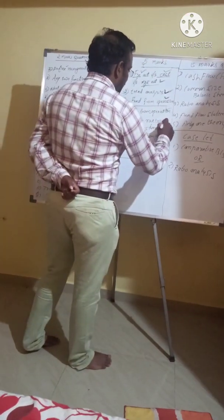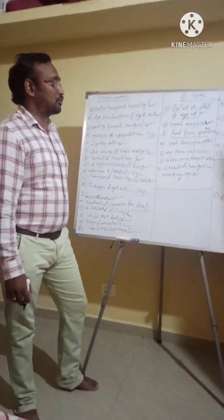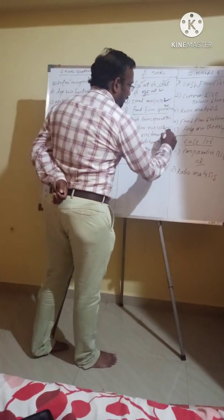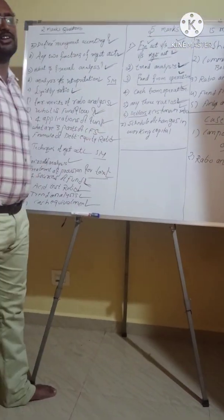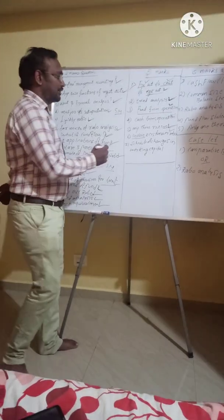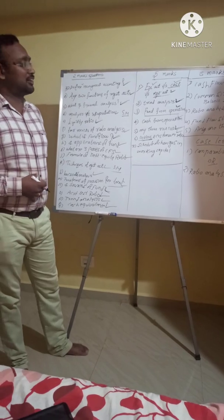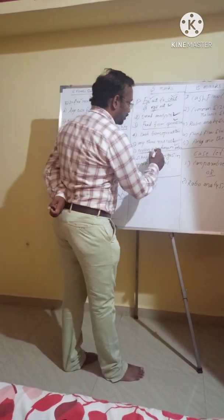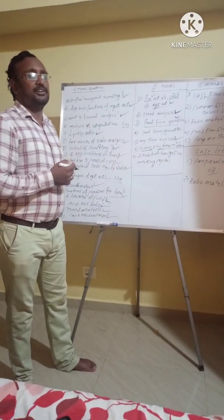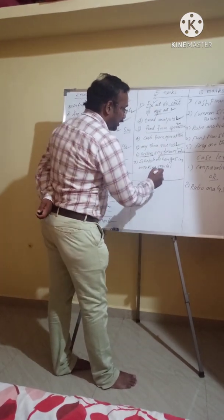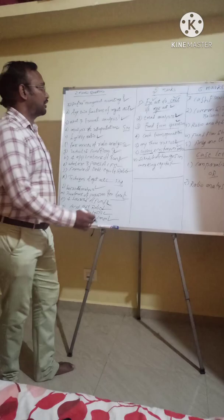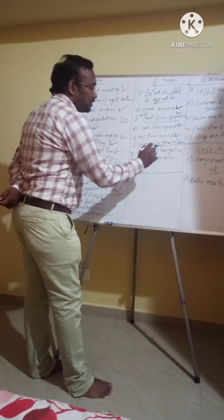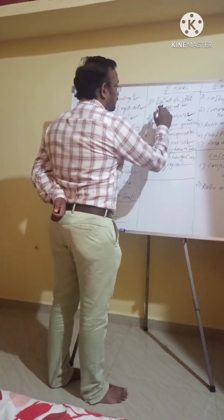We have three ratios: current ratio, quick ratio, liquidity ratio, proprietary ratio — any three or four ratios. We have debtor and creditor turnover ratio. Debtor turnover ratio relates to the collection period. The next question is schedule of changes in working capital. Fund from operation and schedule of changes in working capital are both very important problems for five marks.